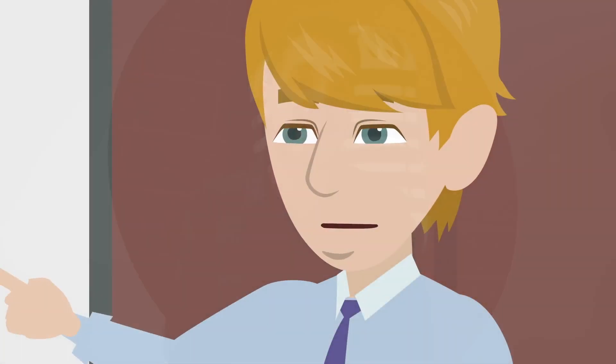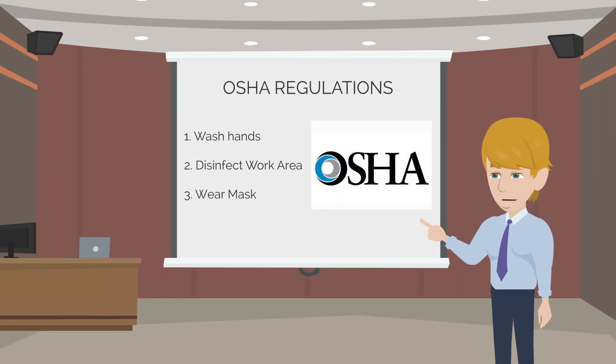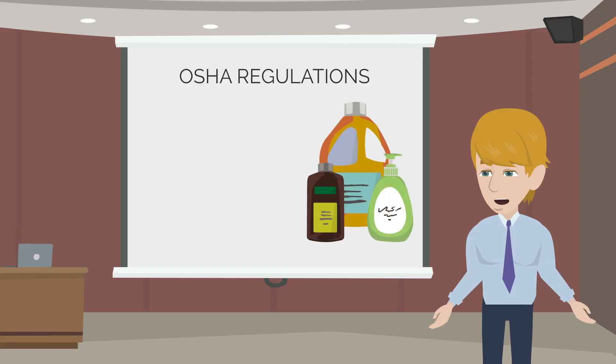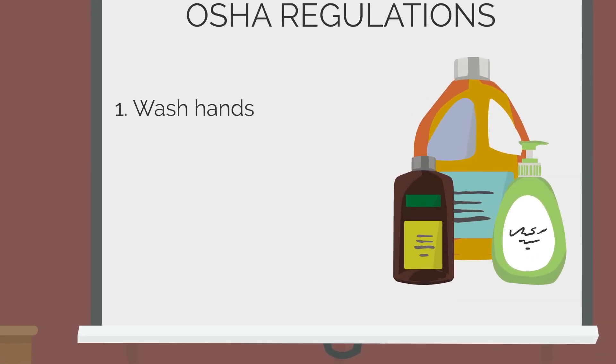When considering what type of image to use on a slide, resist the urge to use only images that encompass the meaning of the entire slide. For instance, if you're delivering a slide that outlines new OSHA regulations and you're tempted to throw an OSHA logo onto the slide alongside the text — instead of doing that, why not use an image that speaks to just one of the bullet points? When your audience sees that image pop up, it prompts a curiosity in them — like a question mark in their brains — as to what that image is referring to.